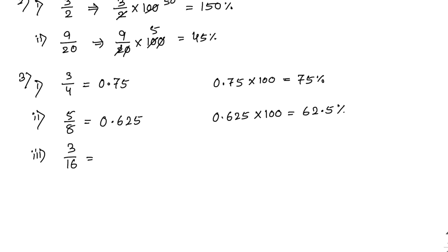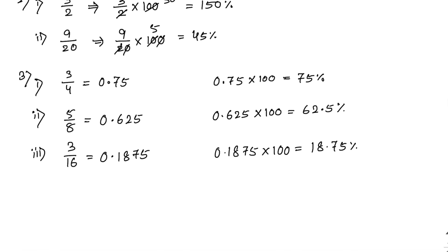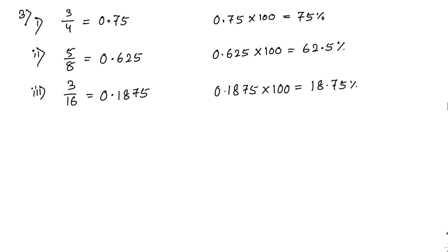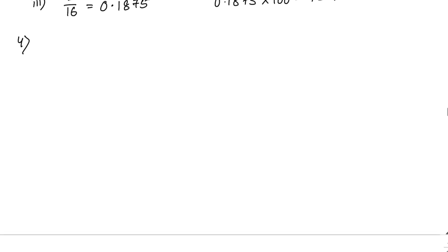The third one is 3 by 16. Divide 3 by 16 to get the decimal 0.1875. Multiply by 100 to get 18.75 percent as your answer. Now next is sum number 4: express the following fractions as decimals correct to four decimal places, then express the decimal as percentage.